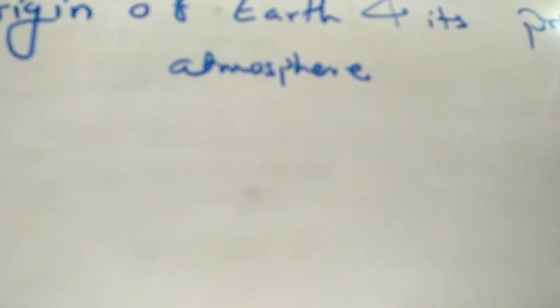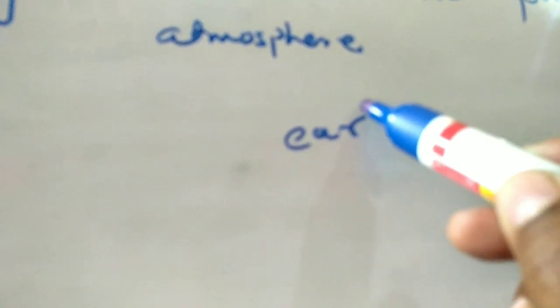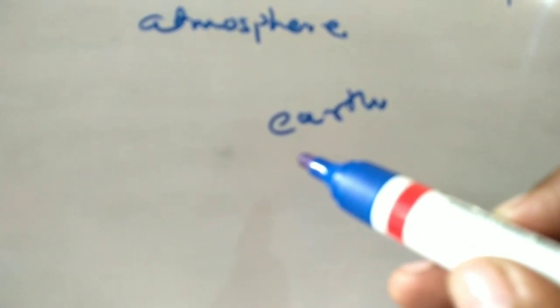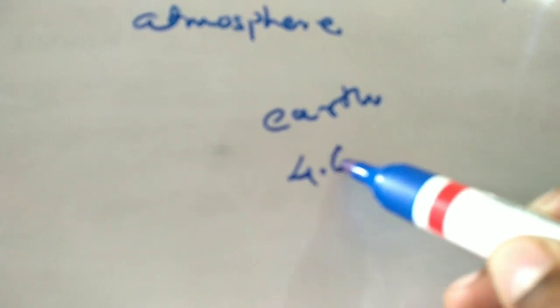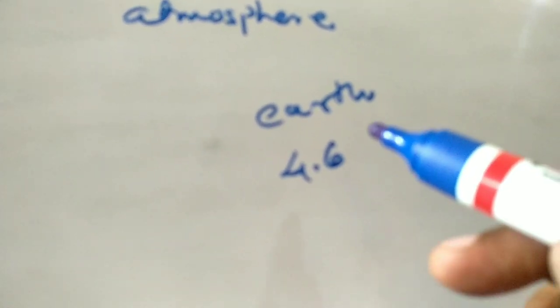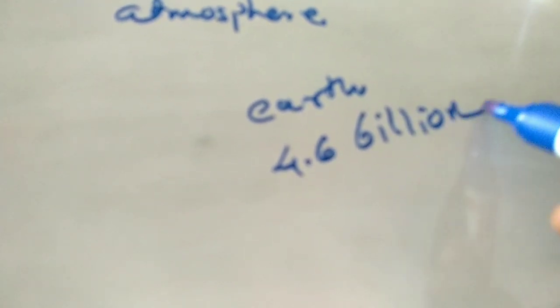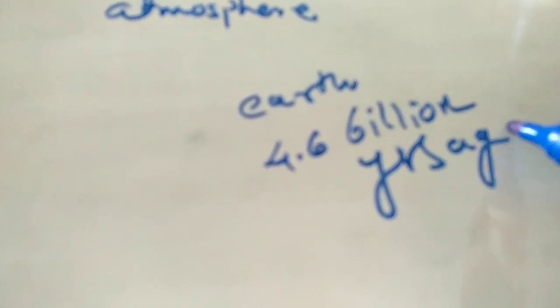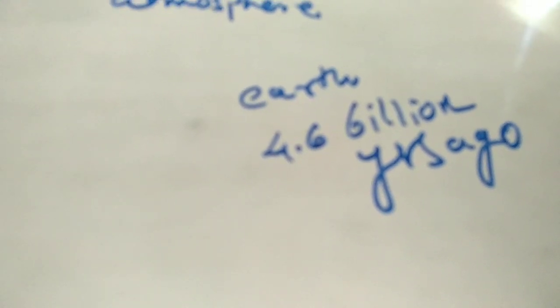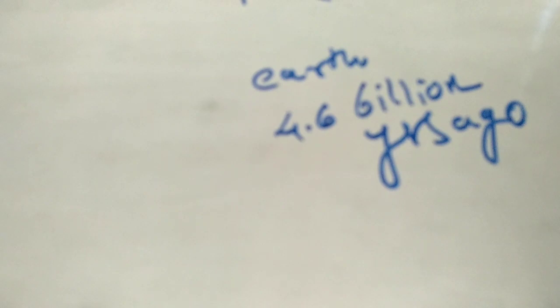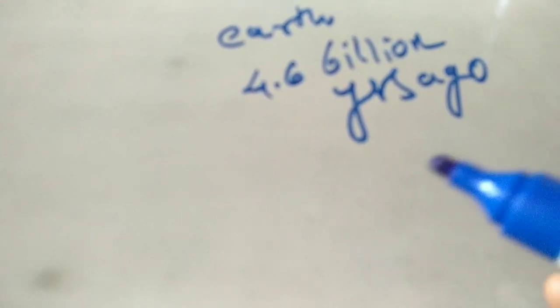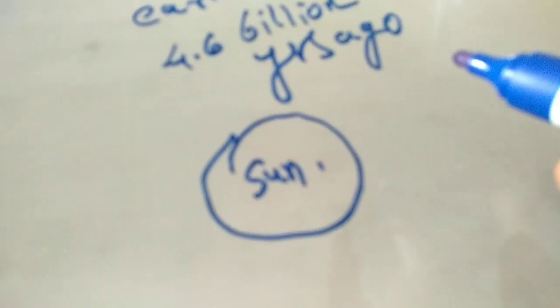The origin of life on the earth is closely related with the origin of earth. Evidence suggests that earth came into existence near about 4.6 billion years ago. When it was broken from the sun, the earth was like a glowing fireball.